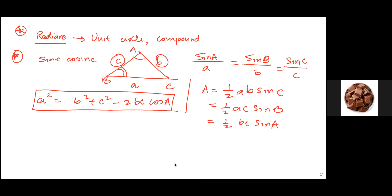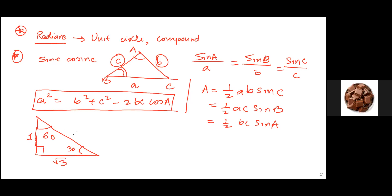Just to recap basic trigonometry: we must remember the 30-60-90 triangle, because a lot of times in a non-calculator paper you get questions like this. If you have an angle of 30 degrees and 60 degrees, opposite to 30 we take generally 1, opposite to 60 is root 3, and the hypotenuse is 2. You can use this triangle to find the sine and cosine ratios of 30 and 60.